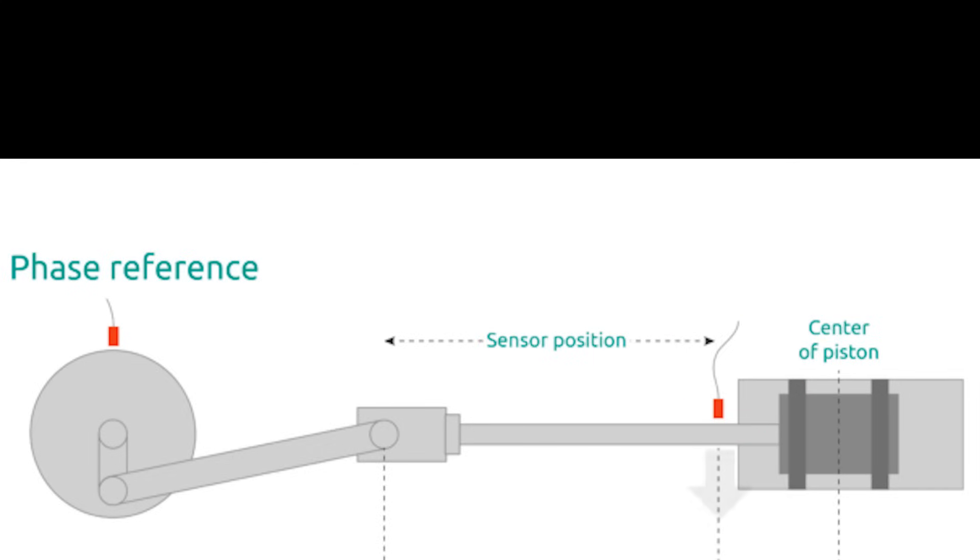As wear occurs, the shaft will drift in relation to the probe, producing a change in voltage. This measurement is typically taken in conjunction with a key phaser measurement. The key phaser is used to ensure the crank is in a specific orientation each time the rod drop measurement is captured.